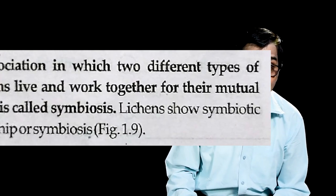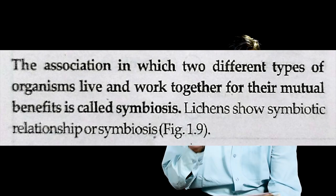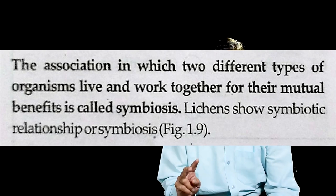The algae provides food through photosynthesis while the fungi attaches to rocks and provides protection to the algae — they mutually benefit each other. This is called symbiosis: the association in which two different types of organisms live and work together for their mutual benefit. Mark this definition as it often comes in the exam. The Rhizobium bacteria growing on nodules of leguminous plants is another example of symbiosis.